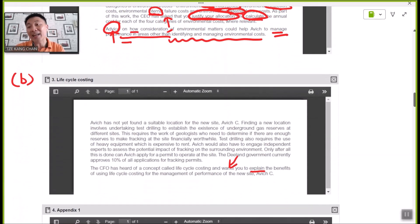Looking at the second requirement that is pertaining to life cycle costing, spend some time to take a look at all the stories given, and here come the tasks. The CFO has come across the technique named life cycle costing, and here are your tasks. You have to explain the benefits of using life cycle costing in managing the performance on the new site, which is something like a new product, which in this case is Avich C.